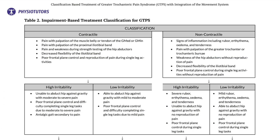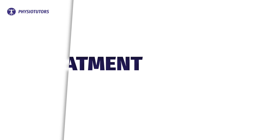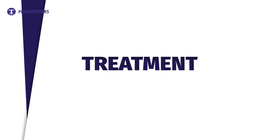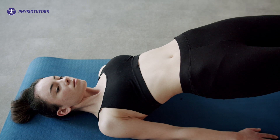Impairments to consider in GTPS include hip abductor weakness, pelvic control on the frontal plane, and iliotibial band tightness. These factors increase compressive forces on the gluteal tendons. The lead author of this paper proposed a classification system for GTPS.